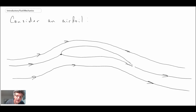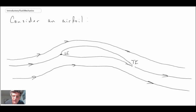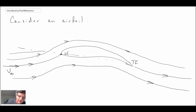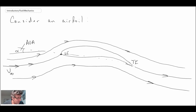We have the leading edge, given the acronym LE, and the trailing edge, given the acronym TE. We also have the angle of attack, which relates to the difference between the free stream velocity V-infinity and a line going from the trailing edge to the leading edge — that angle is alpha, sometimes written AOA. This airfoil has a lot of camber. Now we're going to take a look at a little experiment.